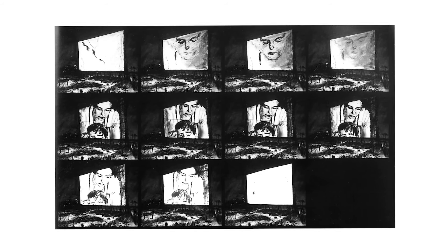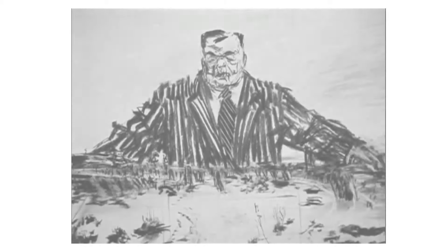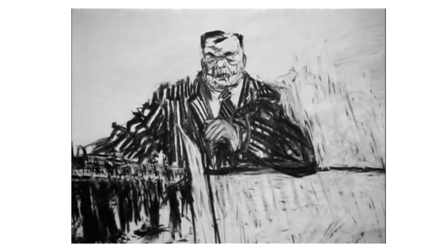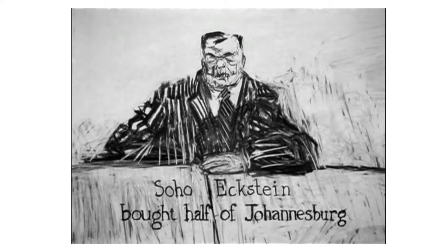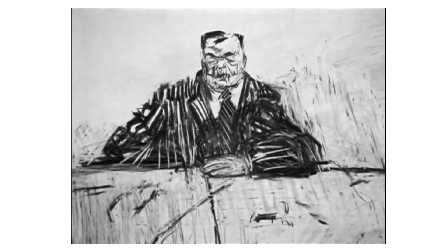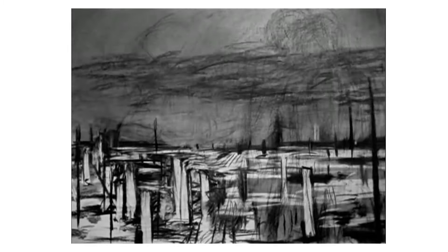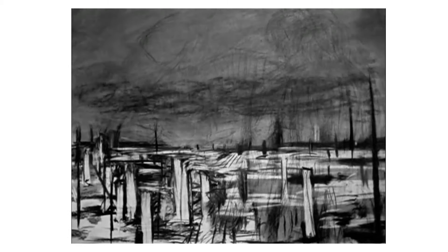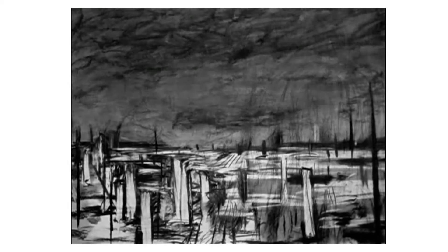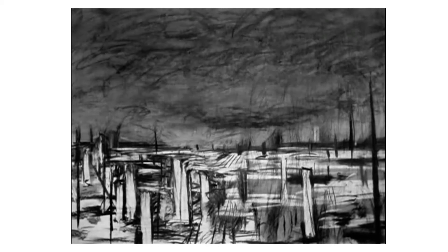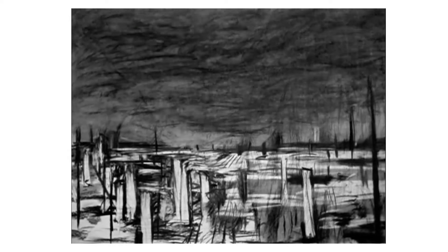Scenes from his childhood, from his parents, from his first love, and from his experiences in and around Johannesburg. The main character is of course Soho Ekstein, the archetypal capitalist, and he is often pitted against his foil, a character called Felix Teitelbaum, the archetypal lover and a poet.